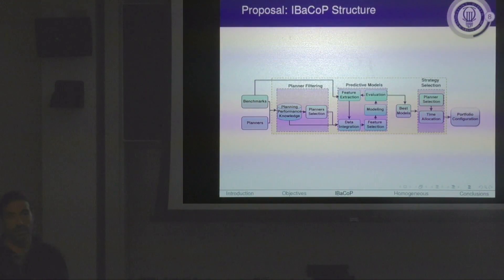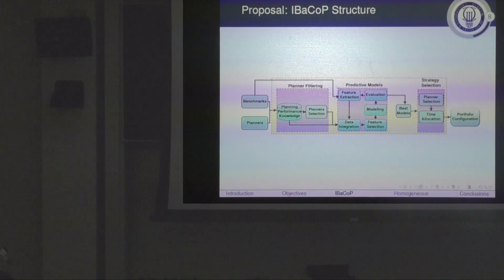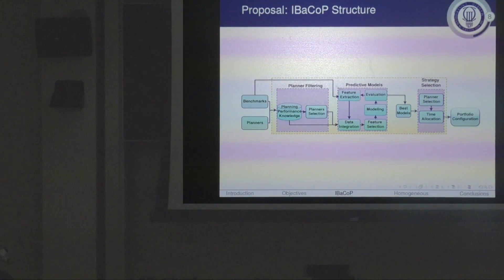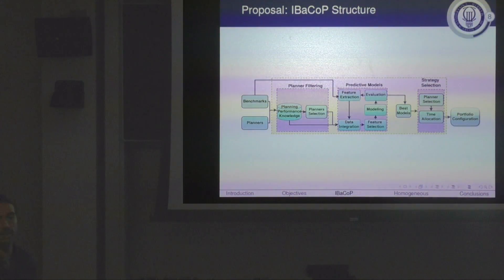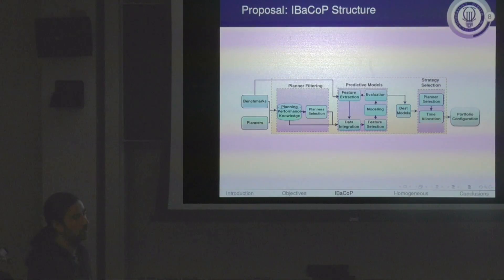We propose the IBACO structure, which is based on three main steps. We assume we have planners and several benchmark domains — for instance, 27 planners. The first step is to execute all the planners in the benchmark domains to obtain their planning performance. With this information we make a first filtering of the planners we want to include. Then we create predictive models that try to predict planner behavior — whether they can solve a specific task or how long it will take. From this phase we configure portfolios in different ways using the learned knowledge.